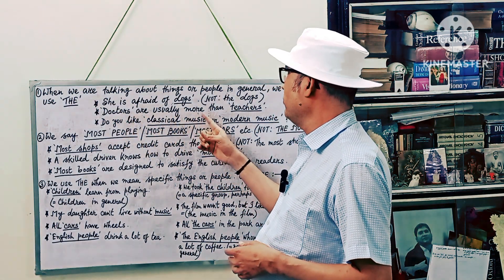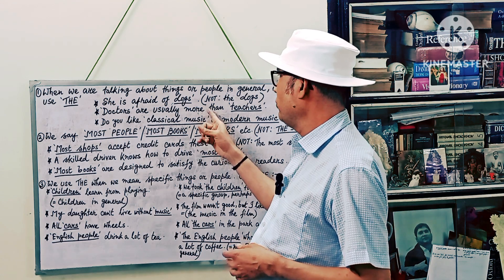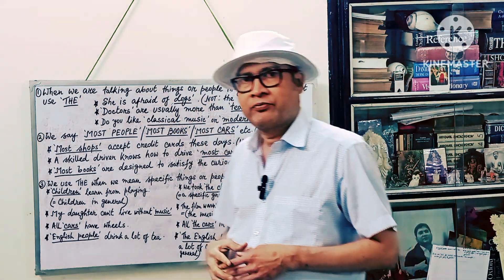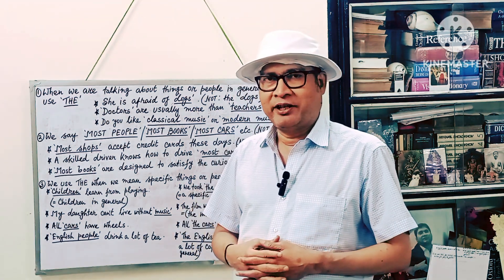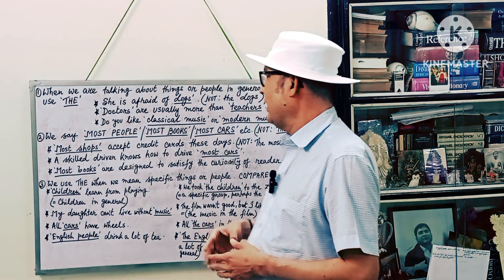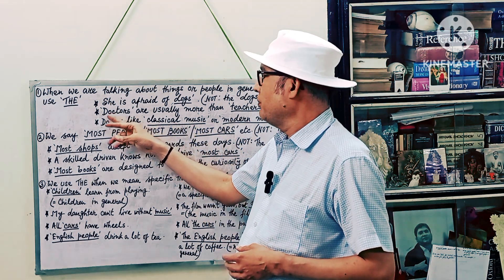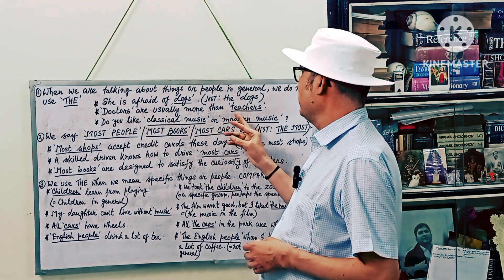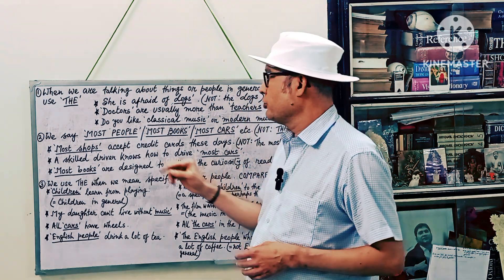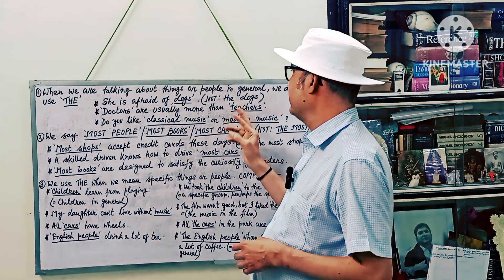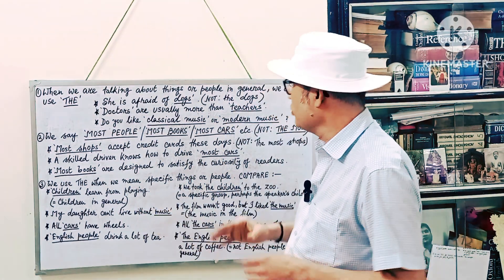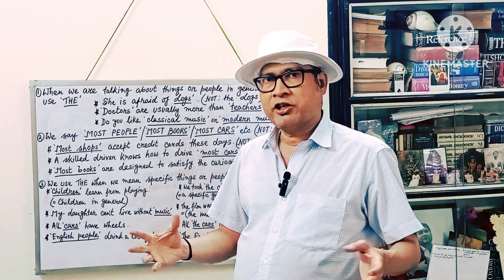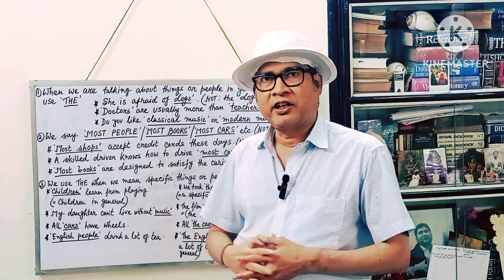Second one: "Doctors are usually more important than teachers." It's of course debatable, so we are not getting into any debate today. Here you see we have used the common noun "doctors" in plural, and there is also another common noun in the plural, and that is "teachers". So there is no "the". You have not said "the doctors are usually more important than the teachers". Why? Because we are not talking about any specific group of teachers or a specific group of doctors. We are talking about doctors and teachers across the world. So we are not using the definite article.